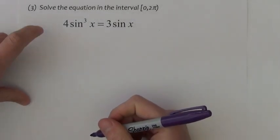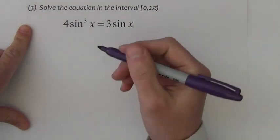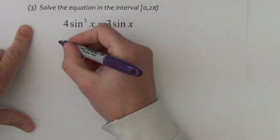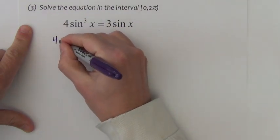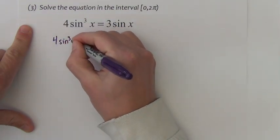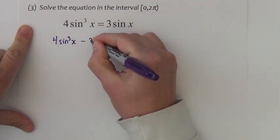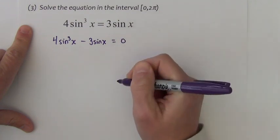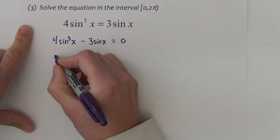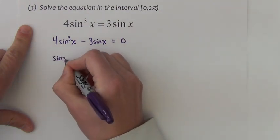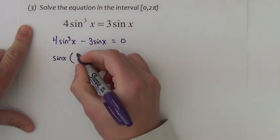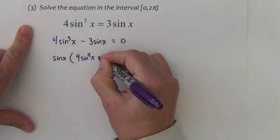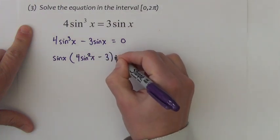Example 3, another tricky equation to solve. What I need to do first is group all the terms on the same side. I'm going to leave the 4 sine cubed x, subtract the 3 sine x to join it. I notice there's a common factor of sine x. If I take a sine out of each of these, I'm left with 4 sine squared minus 3 equals 0.